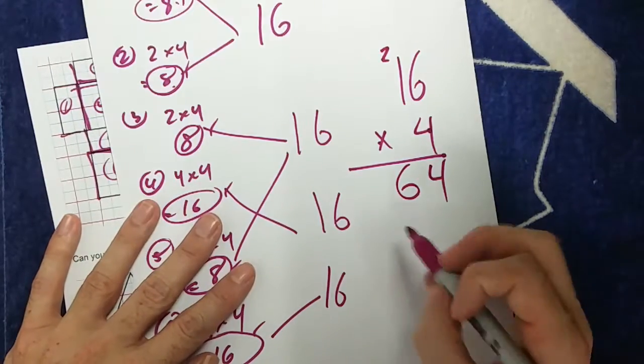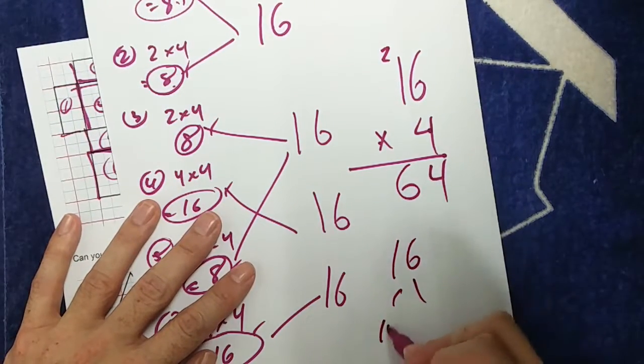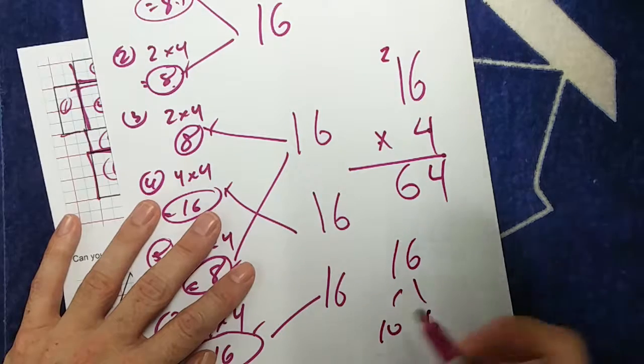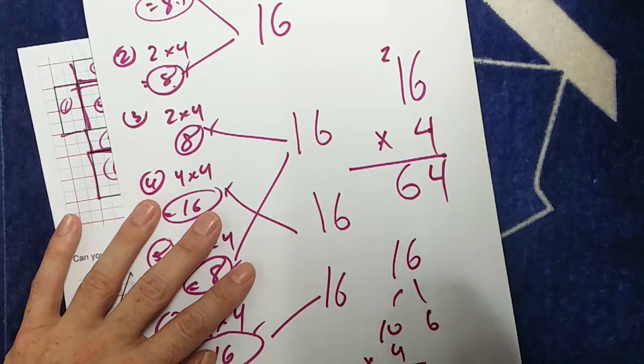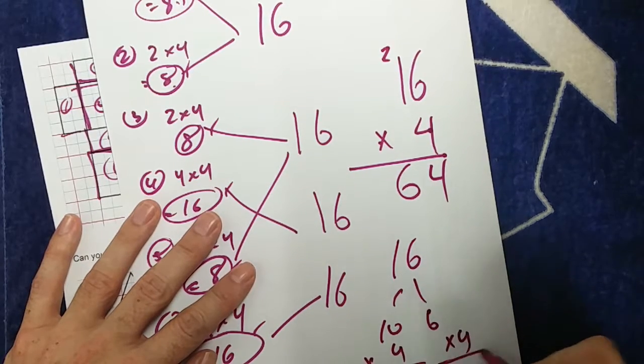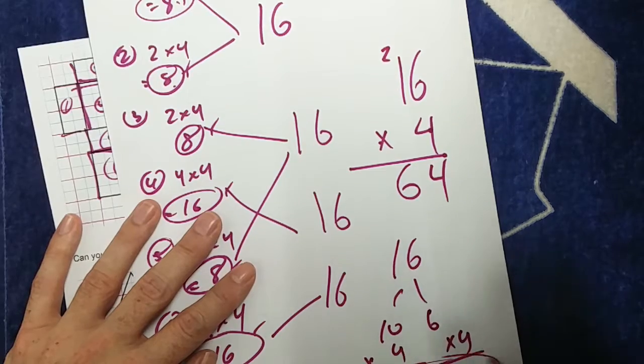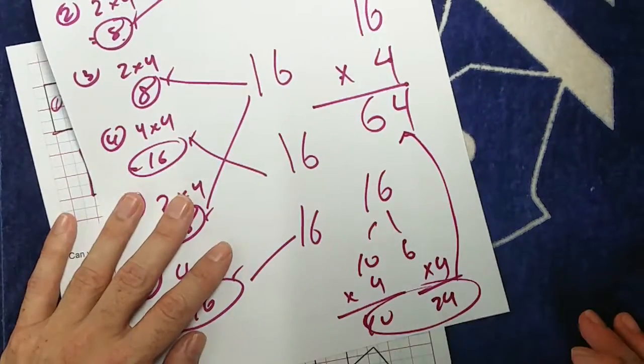If I didn't want to do it that way, I could split 16 up into 10 and 6. 10 times 4 is 40, and 6 times 4 is 24. Add those two together, and I'll get 64 again.